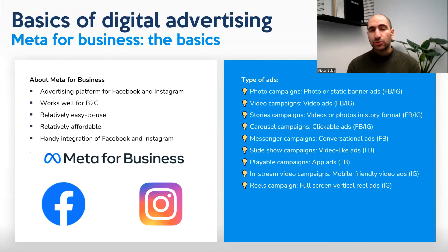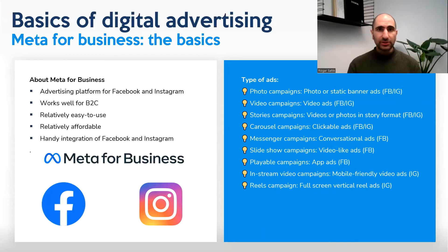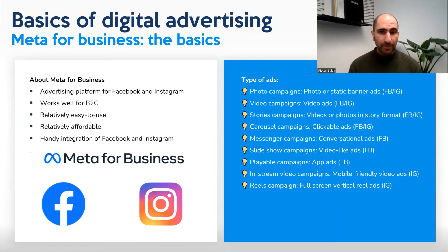The ad types on Meta include photo and video campaigns where a video starts playing, story campaigns with short full-screen videos, carousel campaigns with clickable slideshow-style ads, messenger campaigns for conversational ads, slideshow campaigns, playable campaigns useful for promoting apps, and in-stream video campaigns and reels.